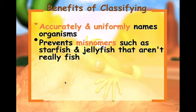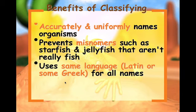Common names are given based on simple observations. Starfish look like a star based on their shape, but they're actually echinoderms. Jellyfish are called that because they're squishy, but they aren't fish — they don't have fins, gills, or lungs. We now use Latin or Greek to scientifically name organisms.